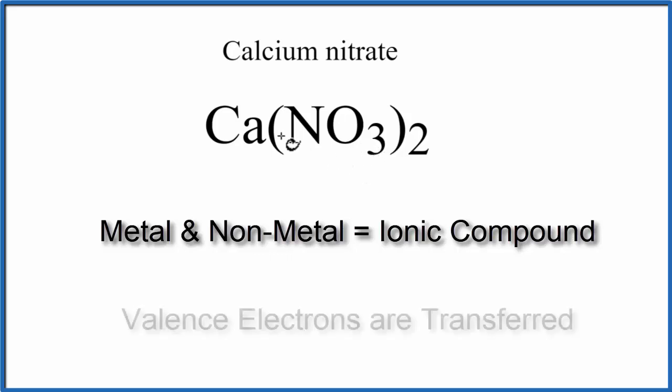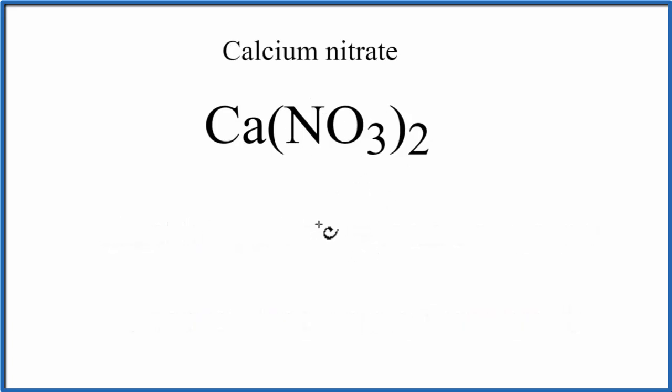With ionic compounds, the metal will transfer electrons to the non-metals. So let's write Ca, we'll put it here in the center, and then NO3 on either side.